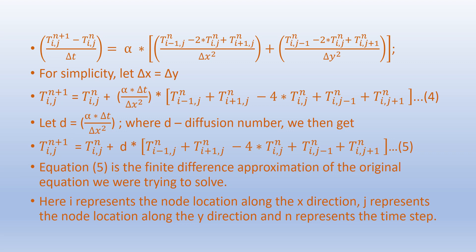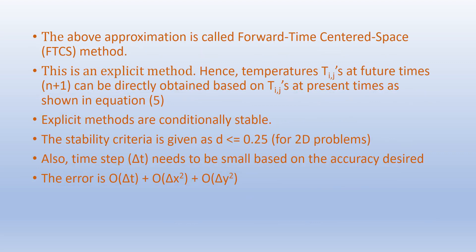Equation 5 is the finite difference approximation of the original PDE. Here i represents the node location along the x-direction, j represents the node location along the y-direction, and n represents the time step. This approximation is called the forward time centered space, or FTCS method. This is an explicit method, so temperatures T[i,j] at future time n+1 can be directly obtained based on T[i,j] at the present time n, as shown in Equation 5.